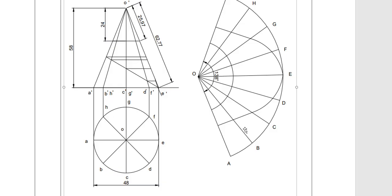Then draw those 8 generators from O to each point: OA, OB, OC, OD, OE, OF, OG, OH, and back to OA.